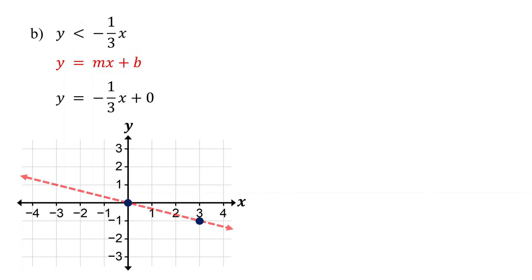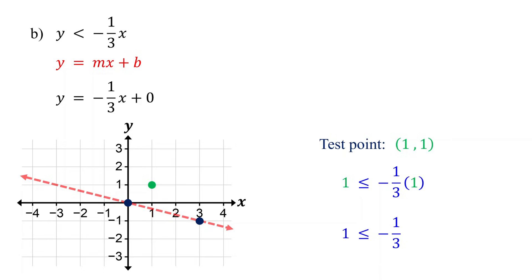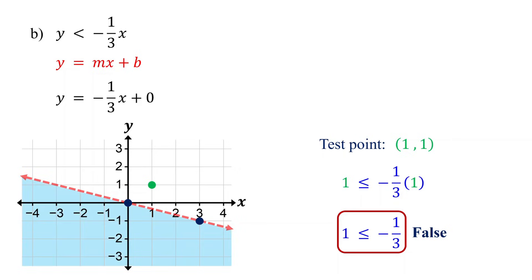The next step is to shade the solution region. Pick a test point that is not on the line. Since 0 comma 0 is on the line, we can't use it. Instead, let's use the point 1 comma 1. It's always best to choose a point that is easy to work with. Now substitute the coordinates into the inequality and simplify. Since 1 is not less than negative one-third, this statement is false. That means the test point does not satisfy the inequality, so it's not part of the solution region. Therefore, we shade the region that does not contain it. That's your graph. Every point in the shaded region is a solution to the inequality, while points on the boundary line and in the unshaded region are not.